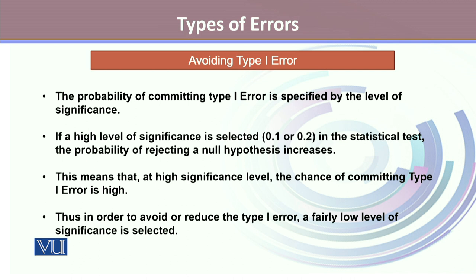One can avoid committing Type I error. The probability of committing Type I error is specified by the level of significance. If a high level of significance is selected, let's say 10% or 20% in the statistical test, the probability of rejecting a null hypothesis increases. This means that at high significance level, the chance of committing Type I error is high.